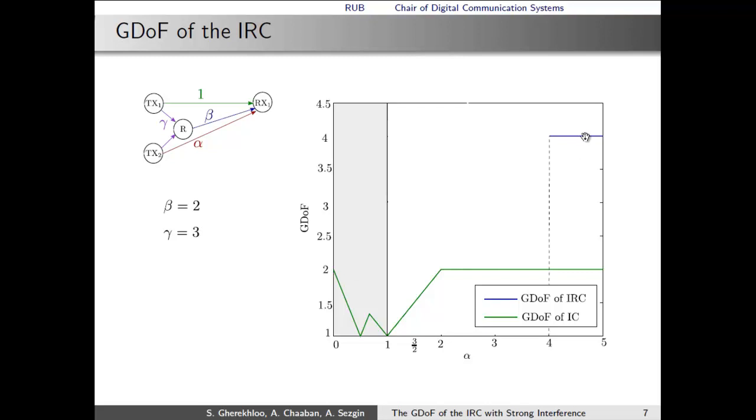In the figure, we observe that when interference is very, very strong, then the GDoF of the interference relay channel has the same constant behavior as in the case of the IC counterpart. Similarly, as interference is strong, we observe that the GDoF is a linearly increasing function of alpha. The behavior of the GDoF in the remaining regime is given here, which is somewhat surprising at first.